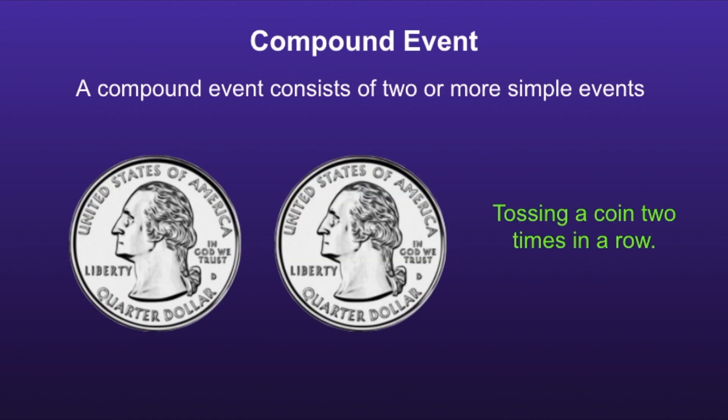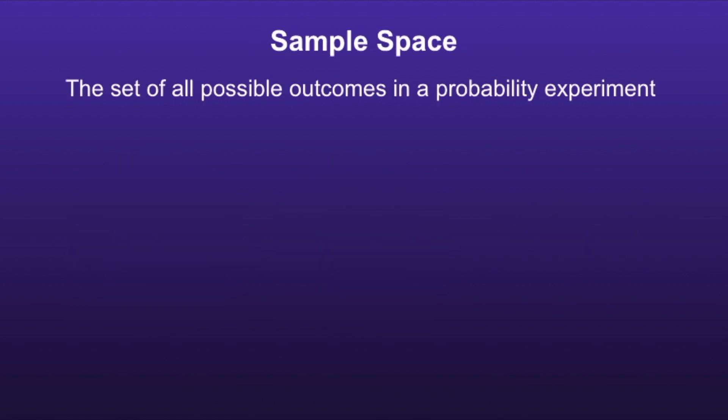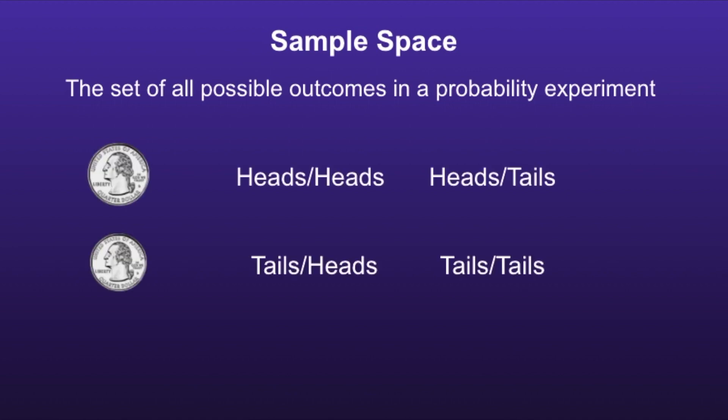For example, tossing a coin two times in a row. The sample space is the set of all possible outcomes in a probability experiment. The sample space of tossing two coins in a row would be heads-heads, heads-tails, tails-heads, and tails-tails, because these are all the possible outcomes when tossing a coin two times in a row.